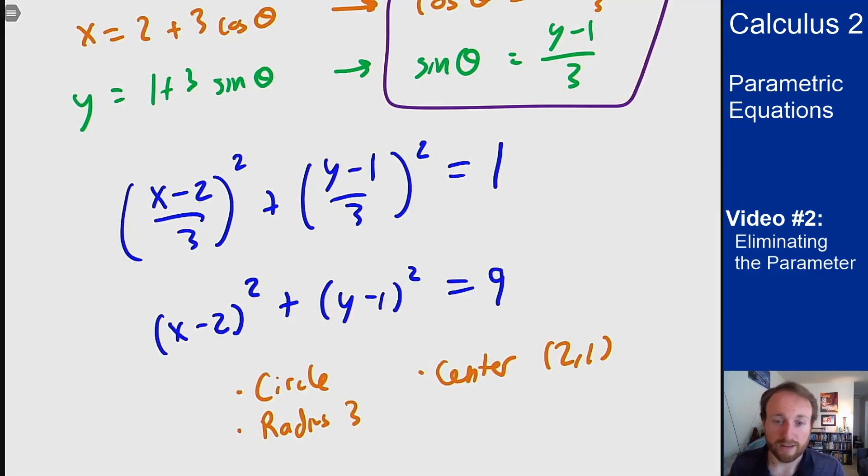You can usually do that by either solving out for t in one of the equations and plugging into the other to simplify it out, or by using some other known relation you have between these different functions to put them together. Your goal is just to get some expression that relates x and y to each other without involving this t, and that'll make it easy to see what's going on for these parametric equations.